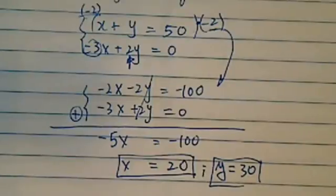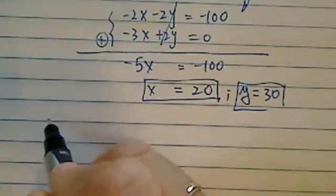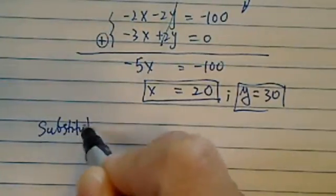That's method one. Method two should give you exactly the same thing. Now method two is called substitution.